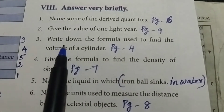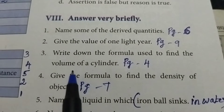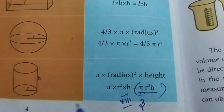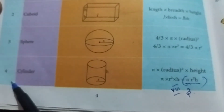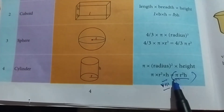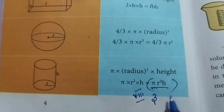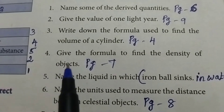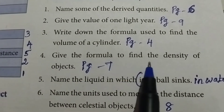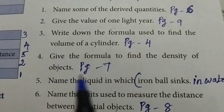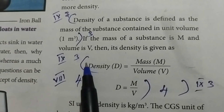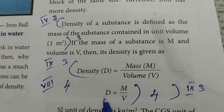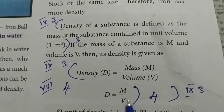Third one: Write down the formula used to find the volume of a cylinder. Take page number 4. Volume of a cylinder equals π r² h. Fourth one: Give the formula to find the density of objects. Take page number 7. Density equals mass divided by volume; D = M/V.